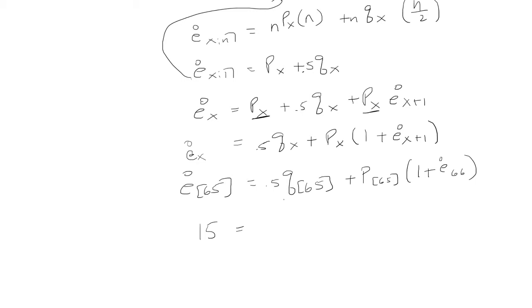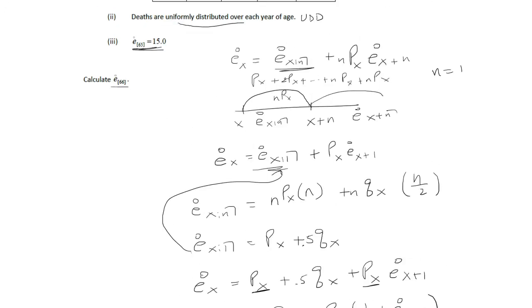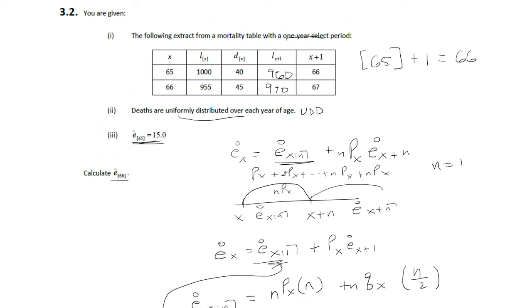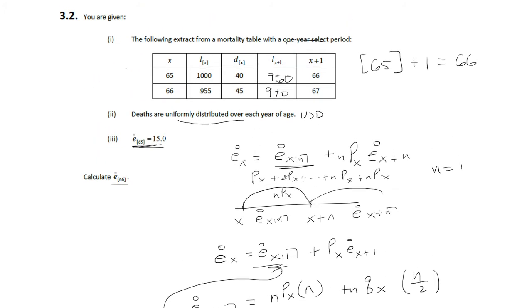I want to find the probability of dying at age 65, so I'm going to get that from up here. This is just 1 minus L66 over L65, so we get 1 minus 960 over 1000, so that's 0.04.